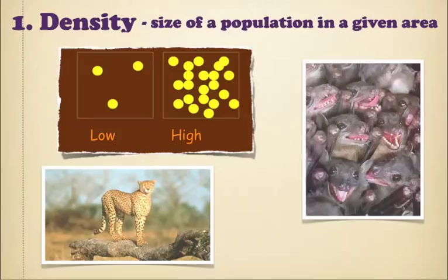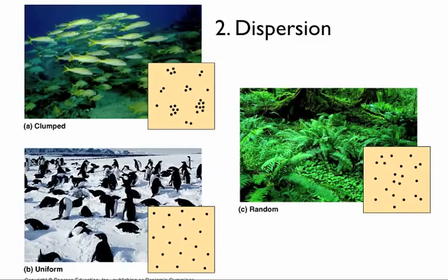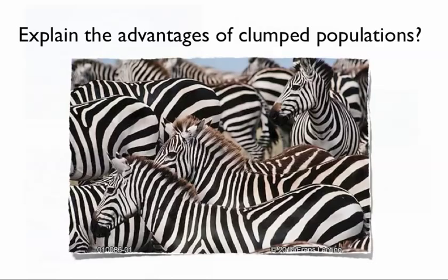Dispersion is how the organisms are arranged in an environment. You got your clumped, which is usually schools of fish or herds where they really clump together. Random is just random. And uniform are evenly spaced populations. What's one advantage of being clumped? We said in herds, it's great because you're protected against predators, especially if you're that zebra in the middle right there. So that is good, being clumped.